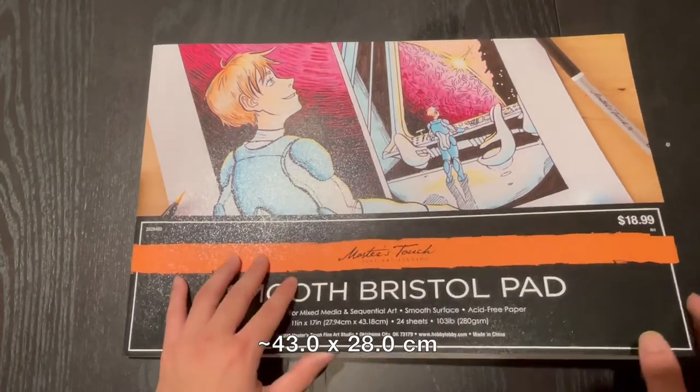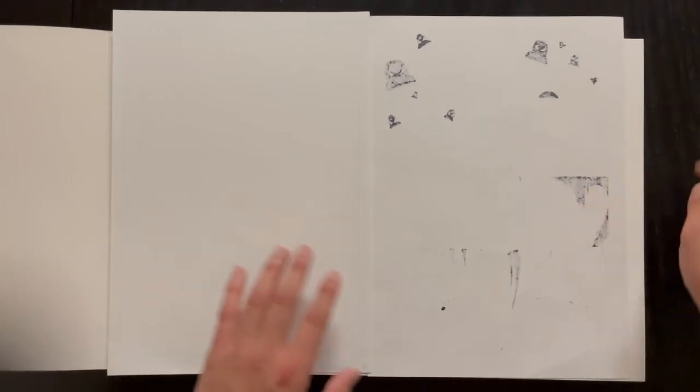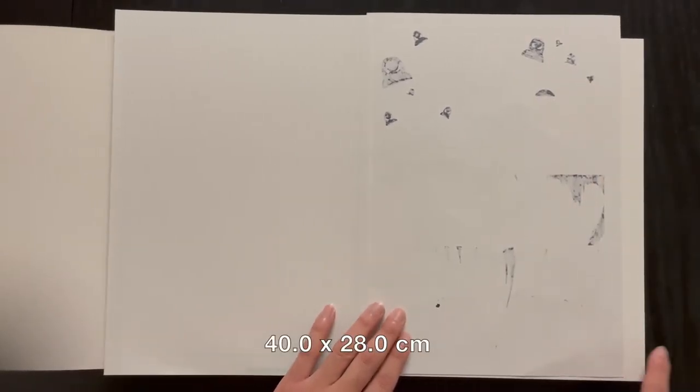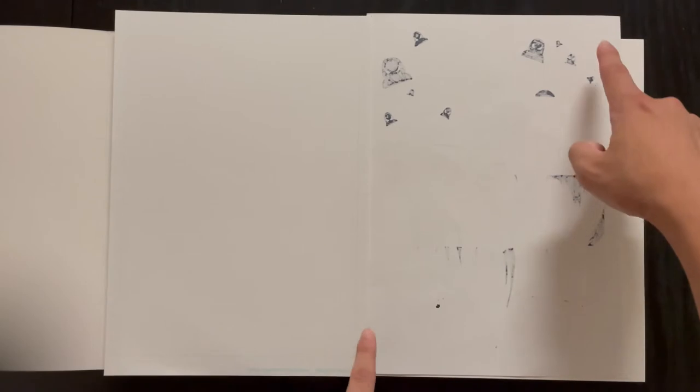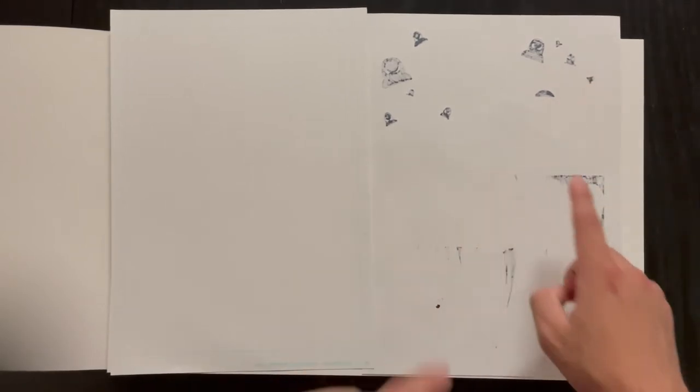In centimeters, this is 43 centimeters in width and 28 centimeters in length. But to adjust from the original dimensions, after some math, we need around a 28 centimeter long and 40 centimeter wide paper. So this paper has a little extra width to it.